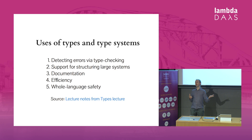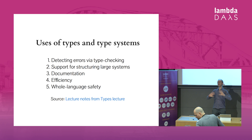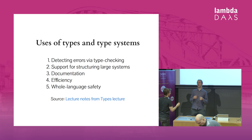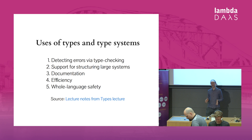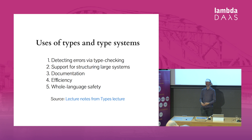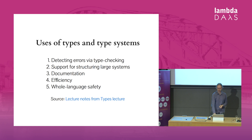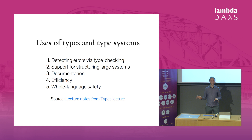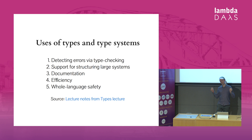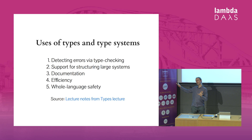That's what we write in the papers, but when you go to conferences and talk to people about types, they will say something completely different. I had a look at the types lecture at the University of Cambridge, where the first slide tells you types are really good — useful for detecting errors via type checking, they support structuring of large systems, they give you documentation, efficiency, and whole language safety. And then from the second slide, it's like Greek letters.